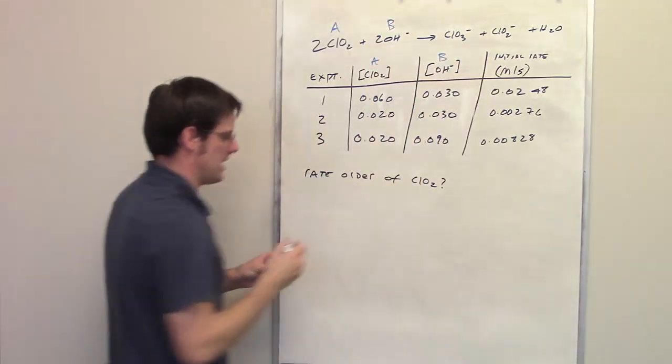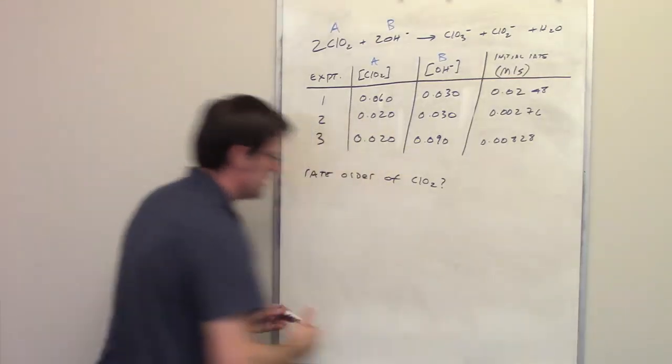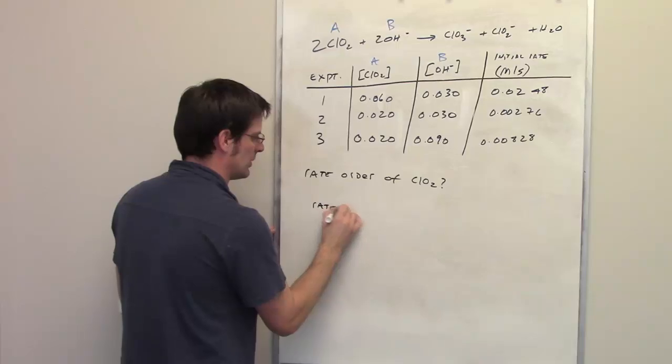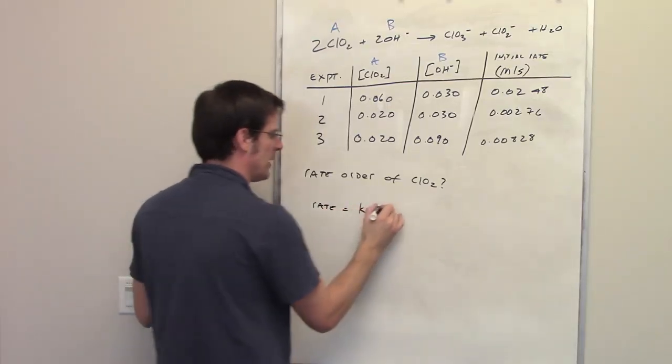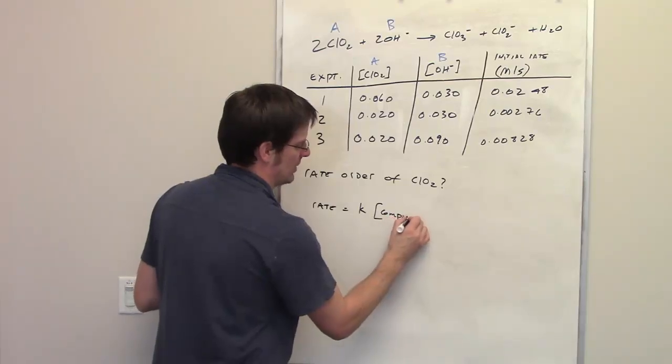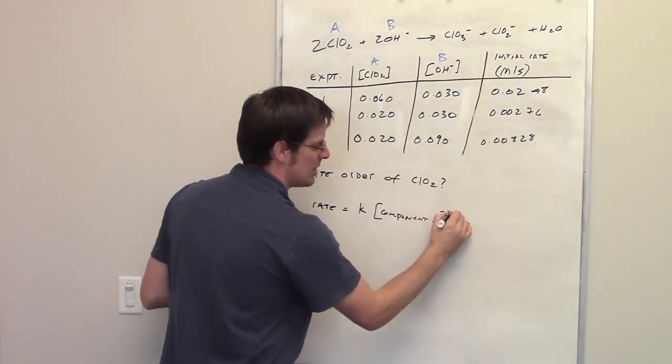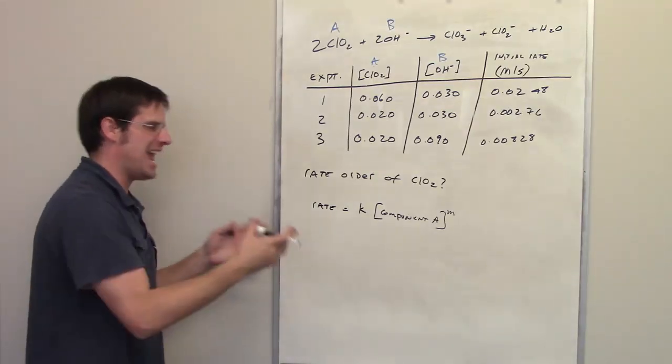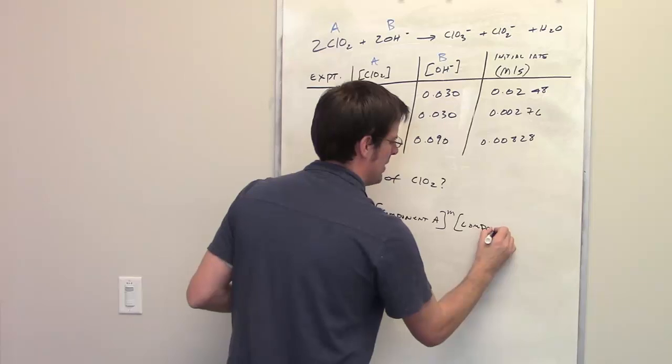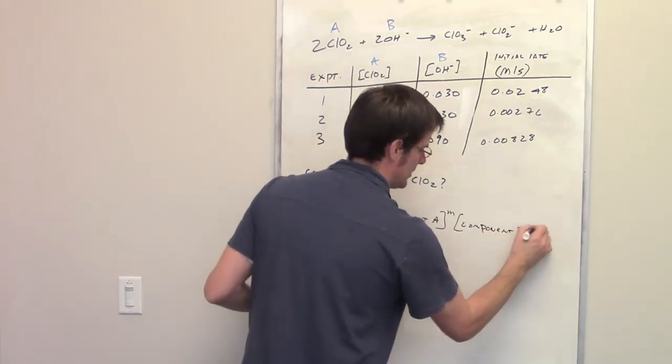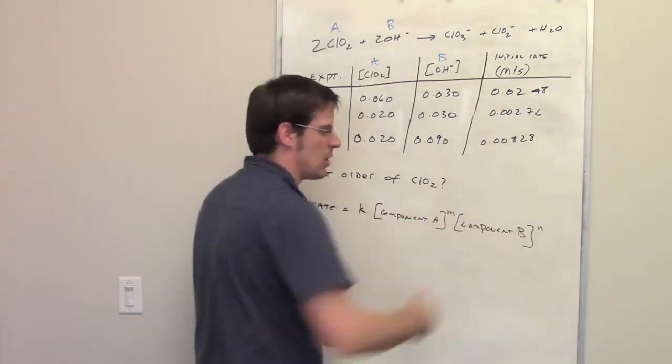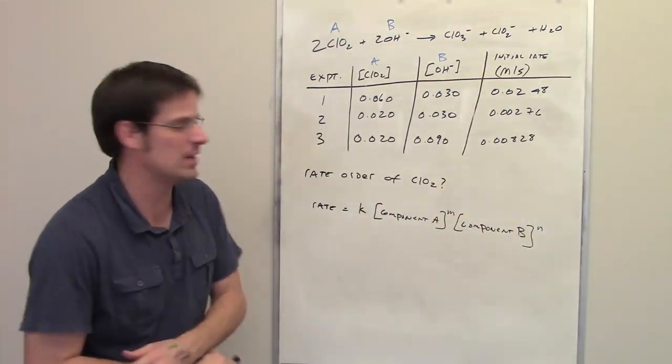We should remember that the rate of any reaction is going to be equal to some rate constant K multiplied by the concentration of component A raised to some exponent M, multiplied by the concentration of component B raised to some exponent N, and so forth if you have more components participating in the reaction.